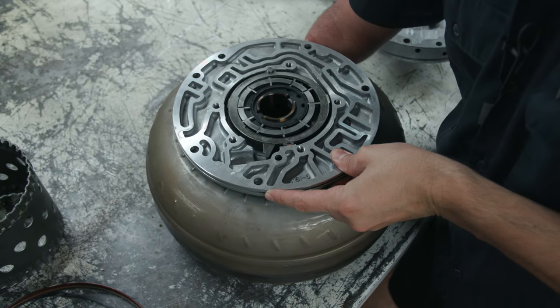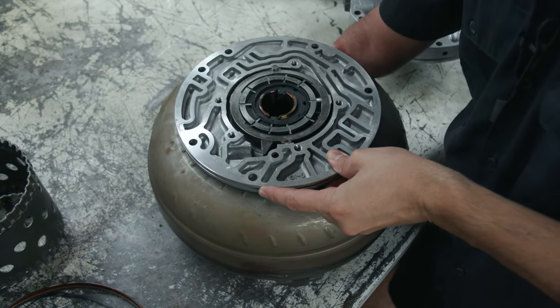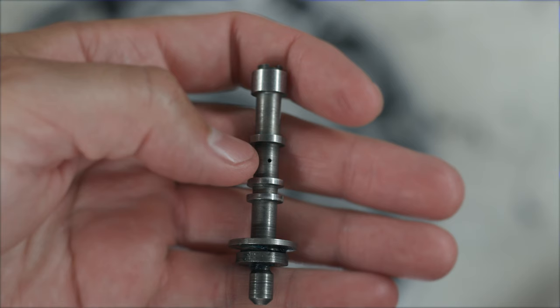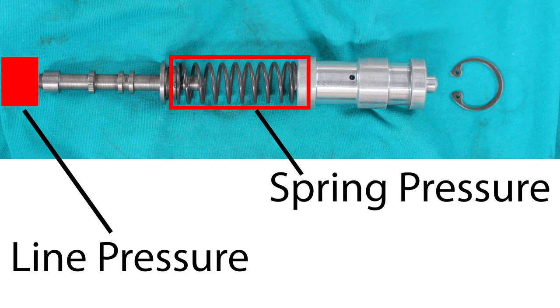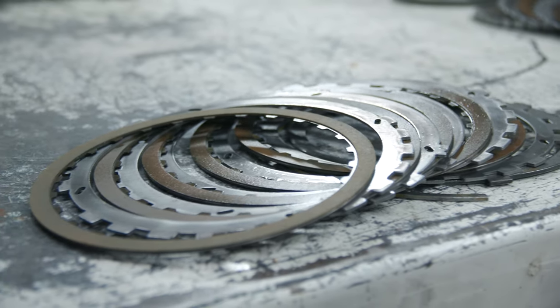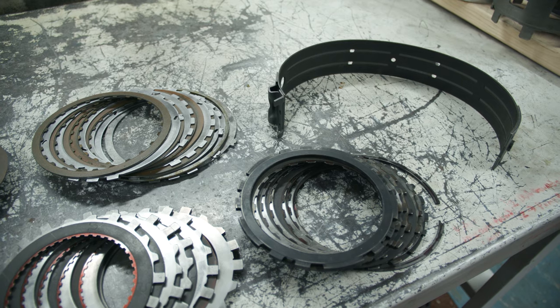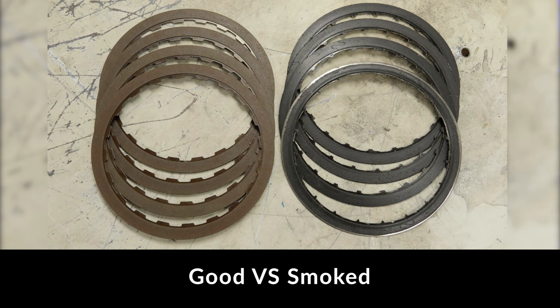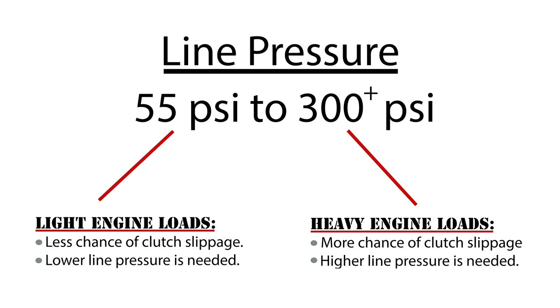If you haven't done so already, you may want to go back and watch some of the videos leading up to this one. In the past, we've covered videos such as how the pump draws fluid in and pushes fluid out, how the pressure regulator valve establishes line pressure. We've learned that line pressure is used to apply the clutches, and it's this line pressure that keeps the clutches from slipping excessively, because when clutches slip excessively, they burn up, and when clutches burn up, you have a transmission failure. We've also learned that line pressure varies from mild to wild depending on engine load that is placed on the transmission.